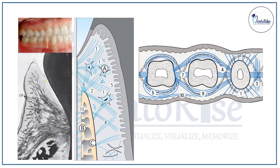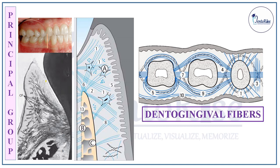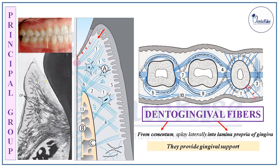Starting with the principal group, the first category of fibers are the Dento-Gingival fibers. From the name itself — dento and gingival — these fibers originate from the dento part, that is from the cementum of the tooth, and splay laterally into the gingival part, that is into the lamina propria of the gingiva. The function of these fibers is to provide gingival support. The course of these fibers is demarcated in the figure in red.